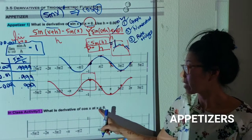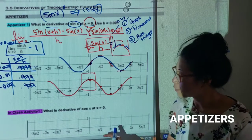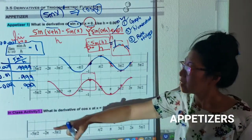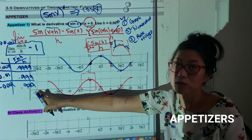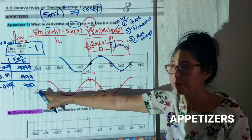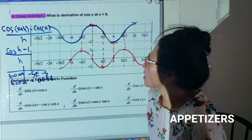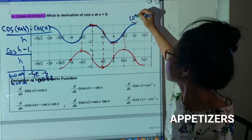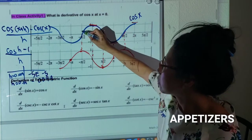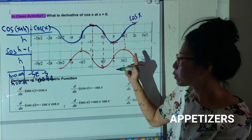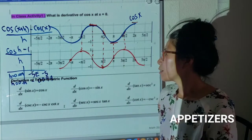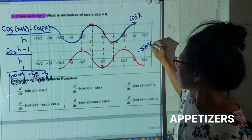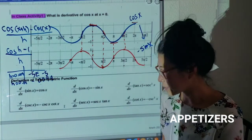Now we have an in-class activity. I want you to do the same thing for cosine x at x equals zero: first graph it, second use rate of change, third plug in numbers and see where they go, then compare with me. So I graphed my cosine function, guessed the derivative slopes, and it looks like a negative sine function — negative sine x as the derivative.